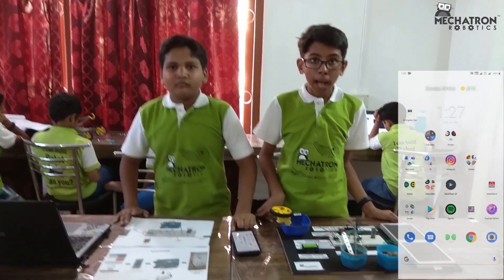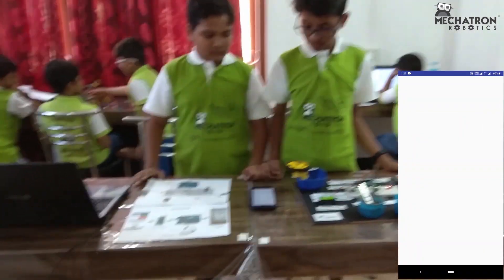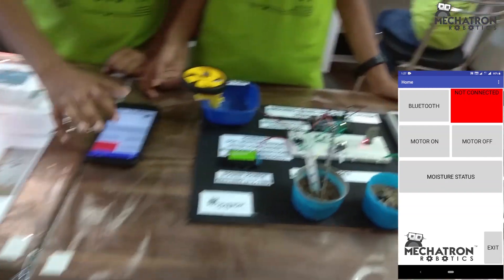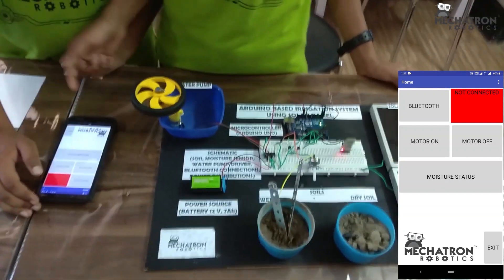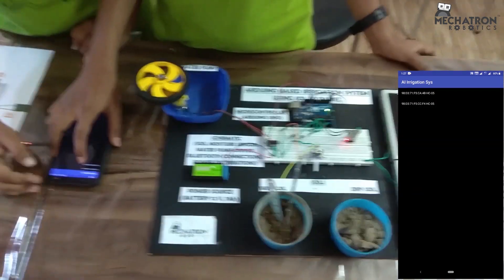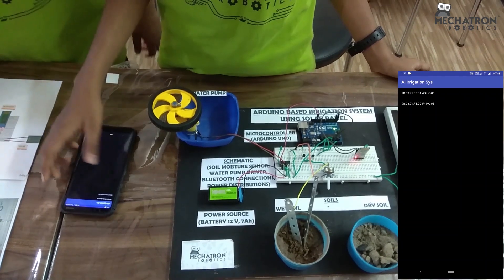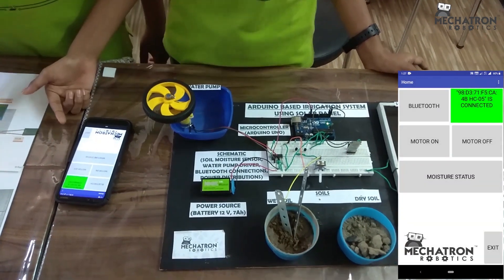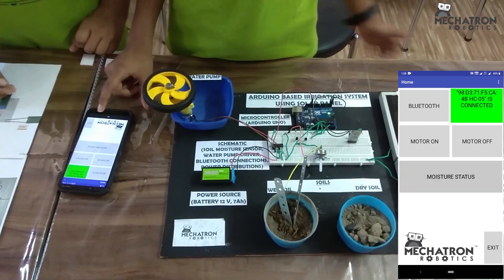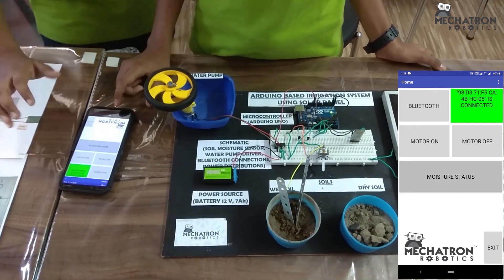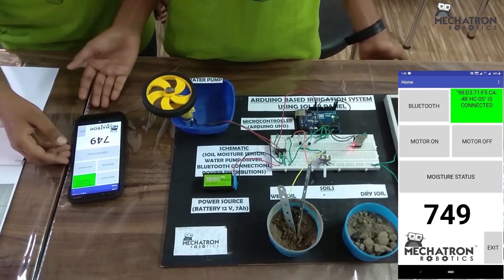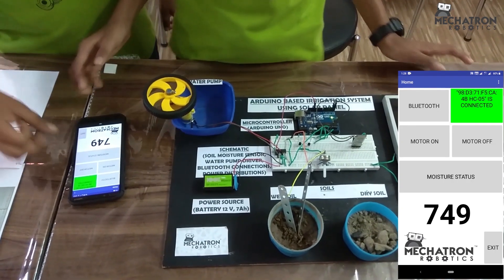Now let us start with the app. Welcome to AI irrigation system. Listening this, we can know that this is user friendly. Now let us come to the Bluetooth. It is HC-05, our Bluetooth module. Bluetooth is connected. We can add the wet soil. If we click on the moisture system, soil moisture value is 749. This means that it is more than 200. That is why the water will not come.